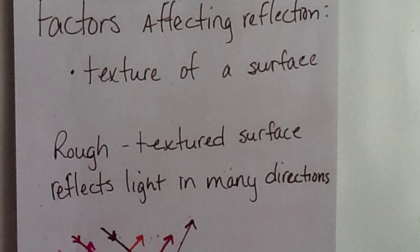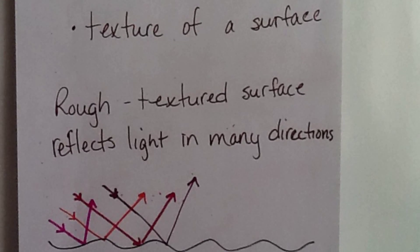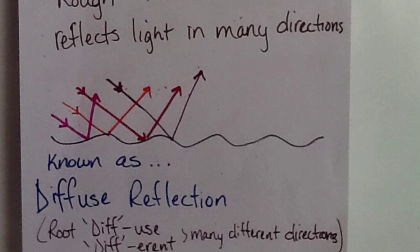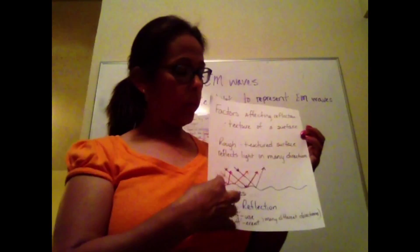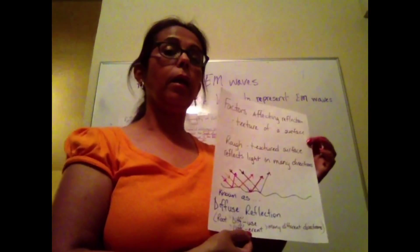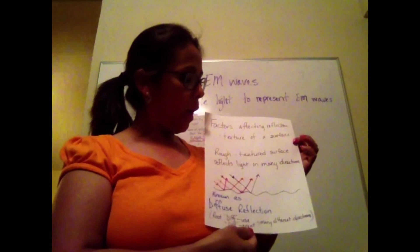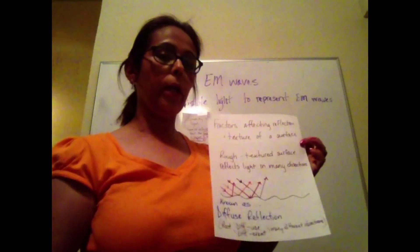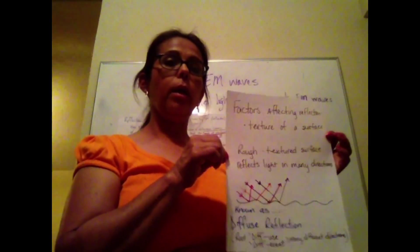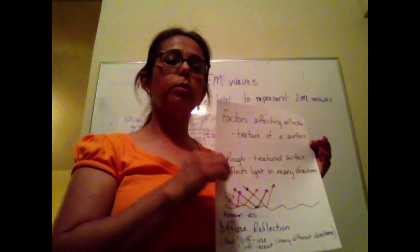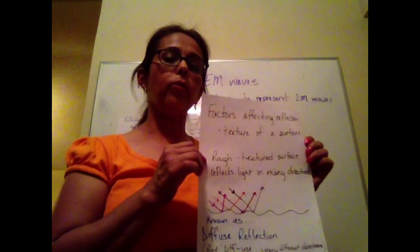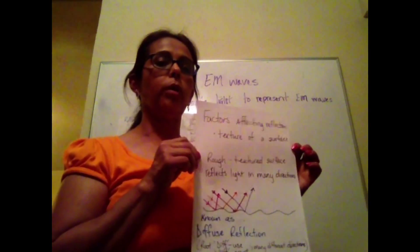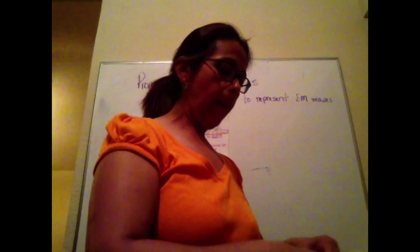The word 'diffuse' — if we break it into prefixes, D-I-F-F meaning 'different' — it's sending light out at different angles. With this type of surface, we would not see a clear image. We need a surface that is not rough or textured, such as a piece of paper. We don't see ourselves through a piece of paper because, if you look at it through a microscope, you'll see how the surface is very rough.